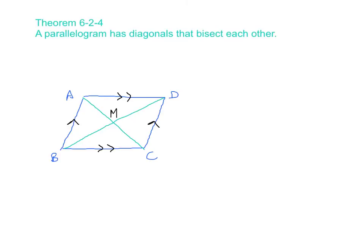What this theorem tells us here is that segment BM is congruent to segment DM. The reason why is that we have a diagonal and it's bisected, it's cut in half. Also, we know that AM is congruent to CM. And again, because that diagonal is cut in half. So these are all the theorems we're going to talk about dealing with the properties of parallelograms.